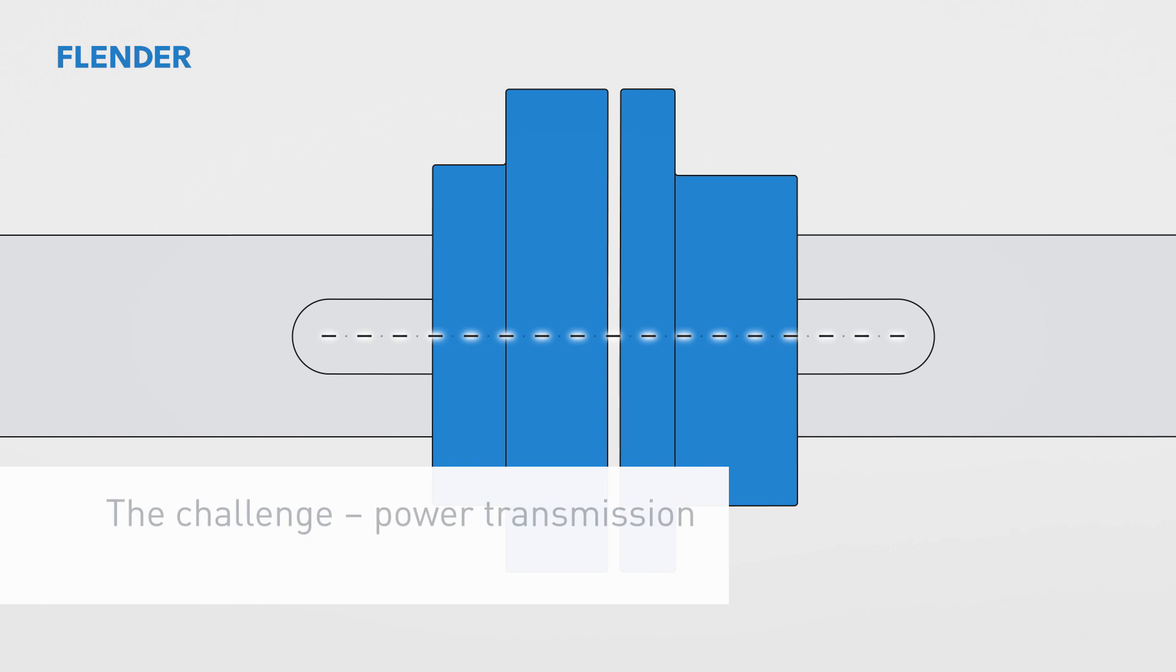In real production environments, the shafts to be connected are almost never in absolutely perfect alignment. For this reason, the NOIPEX always has to compensate for shaft misalignment as well.